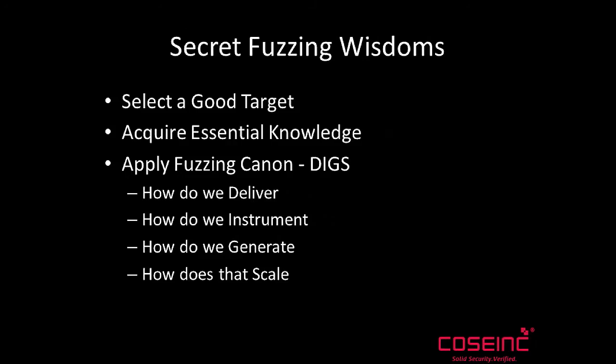Then we have the basics of fuzzing: how do we deliver? What are our attack vectors that we can use to get tests to something in the code that we expect might be vulnerable? How do we instrument? Because if you fuzz and you're not instrumenting, then you've fucked it up already. Fuzzing without instrumentation is really basically wanking. If you don't have a good plan for how am I going to know if it crashed, how am I going to capture the interesting crash state, how am I going to know which of my tests caused that crash, how am I going to know that I didn't miss anything - then you need to go back and do a little more preparation.